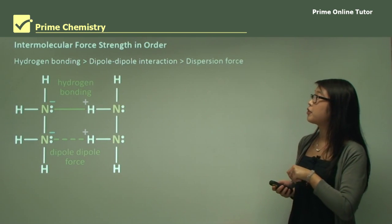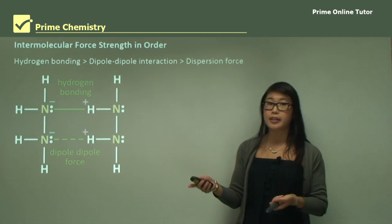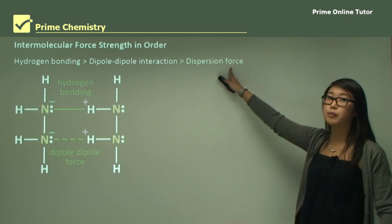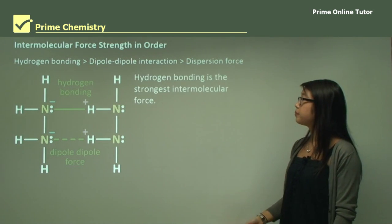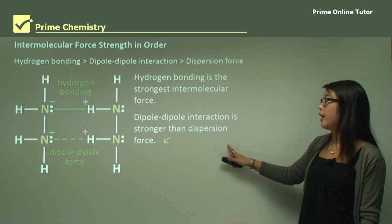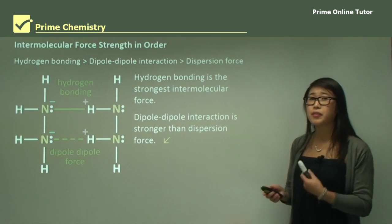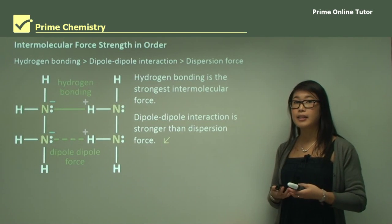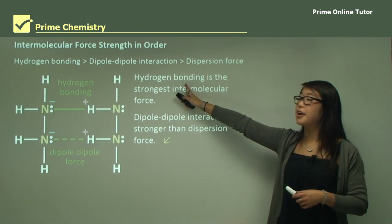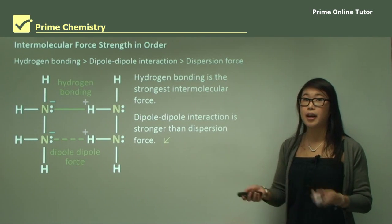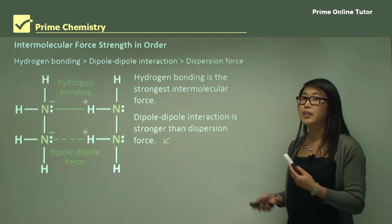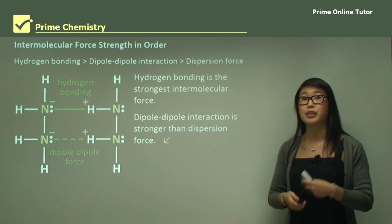The intermolecular force strength order is: hydrogen bonding is the strongest, followed by dipole-dipole, and then dispersion forces being the weakest. However, dispersion forces, even though weak, can add up — if there are a lot of them, they can negate or even exceed hydrogen bonding. So even though hydrogen bonding is present, it doesn't always mean it will have the strongest total bonding.